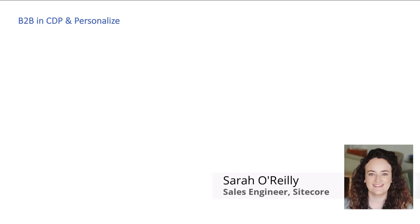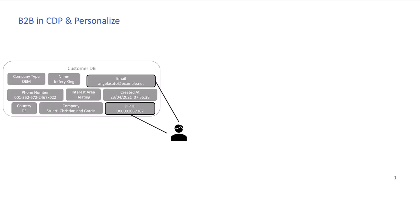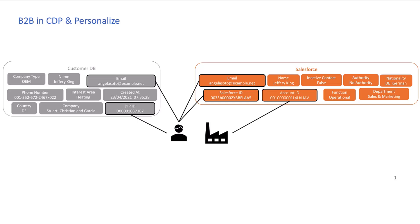To explain this, I'm going to talk about a POV that I did using mock customer data for a B2B business. It includes individuals, and those individuals are part of a larger organization or account. The data for this POV had basically a customer database for individuals — for example, this individual person is Jeffrey King, with details like their phone number, an ID, a customer ID, a DIP ID, and also an email.